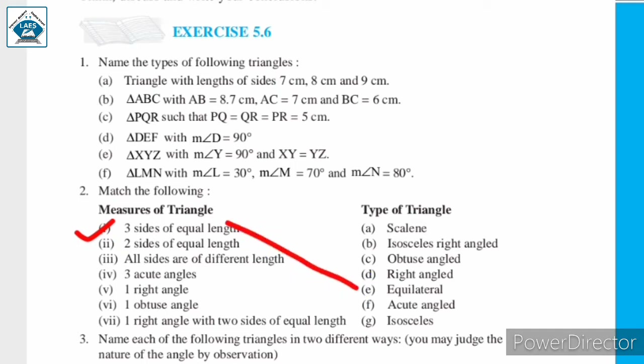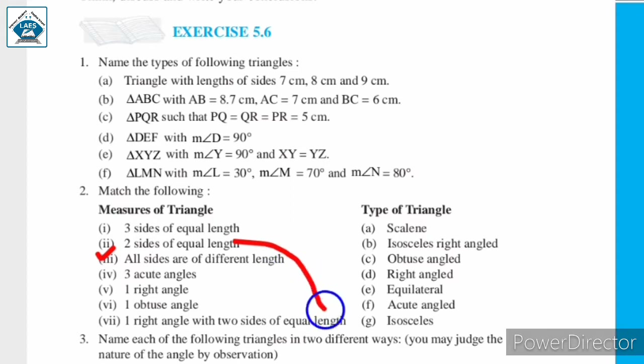So, first matches with E — three sides of equal length: equilateral triangle. Next: two sides of equal length. If a triangle has two sides of equal length, then we call that triangle an isosceles triangle.